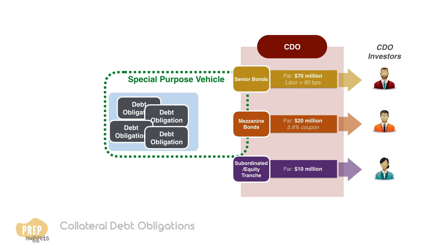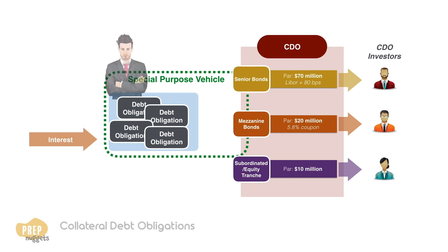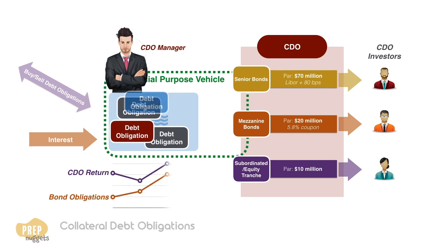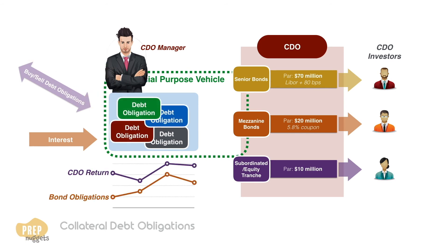Unlike ABS, where the main source of returns to investors is the interest payments from the collateral pool, the returns to a CDO can come from more varied sources. CDOs have a collateral manager who executes trades in the securities in the collateral pool to earn a rate of return higher than the aggregate cost of the bond classes.